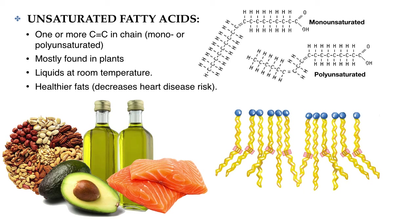So polyunsaturated fatty acids are healthier than monounsaturated fatty acids. Some polyunsaturated fatty acids, like omega-3 fatty acids, such as those found in fish oils like salmon, are not only excellent for heart health, but are also very important for brain development.